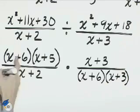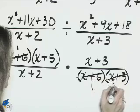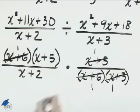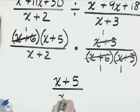And we can cross-divide the x plus 6. We can divide x plus 3. We're left with x plus 5 over x plus 2, and that is the width of the rectangle.